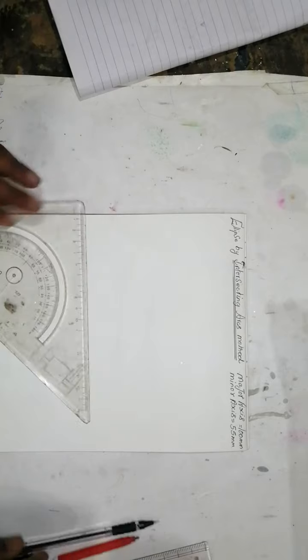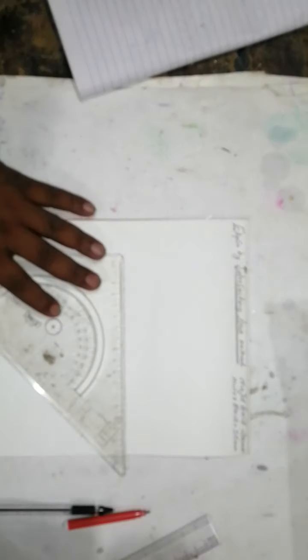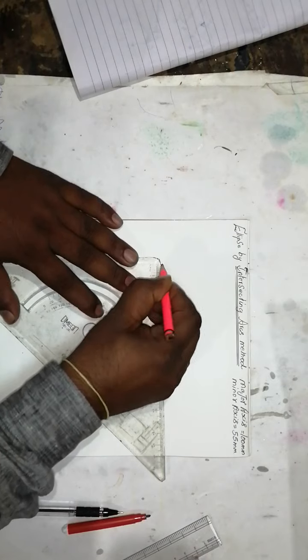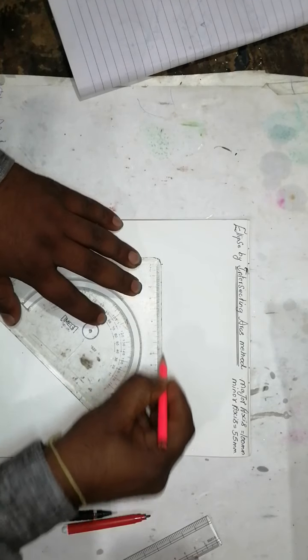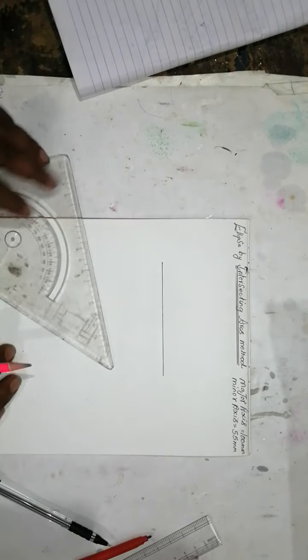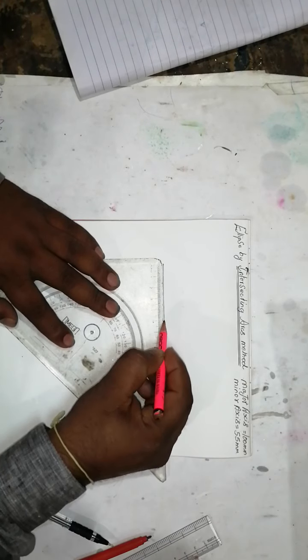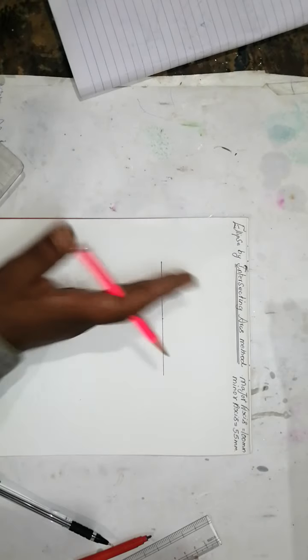First, draw a line and divide it. Take 50mm from the 100mm - you take half, then you'll get 50mm.